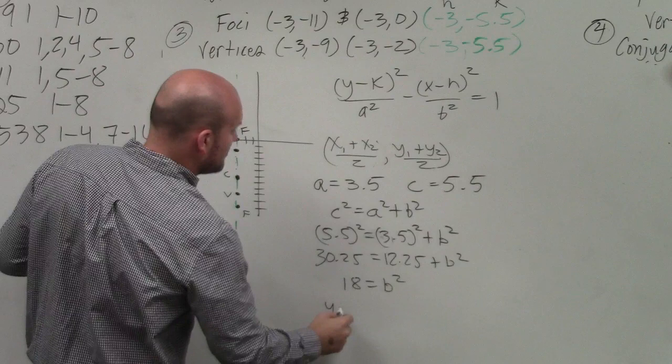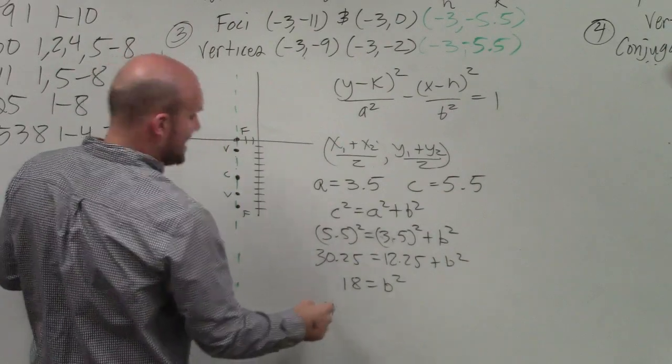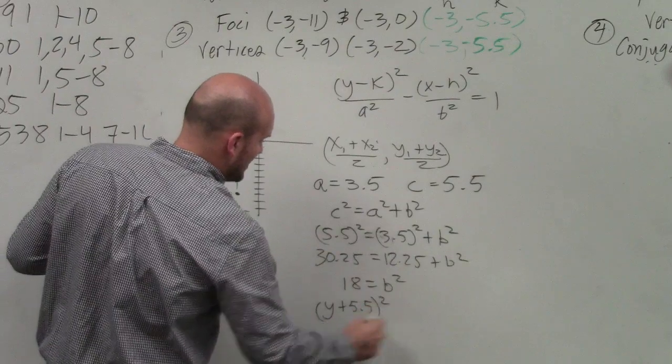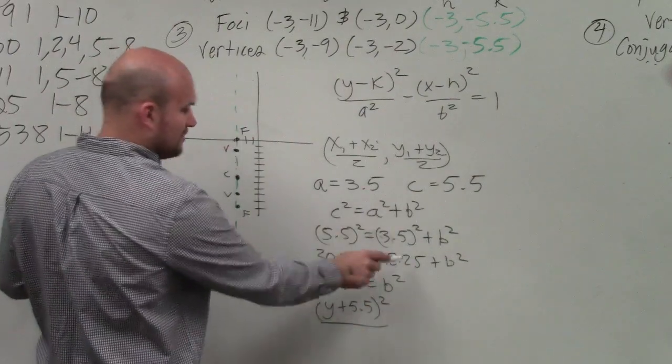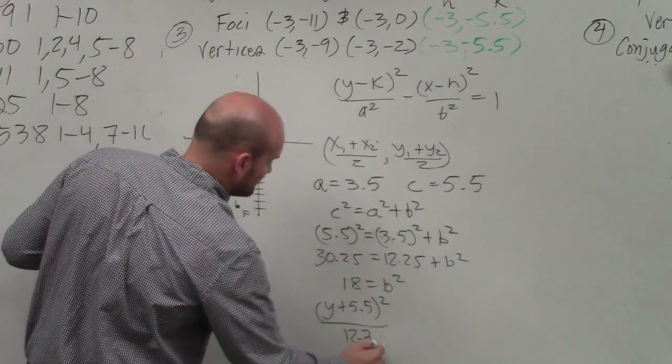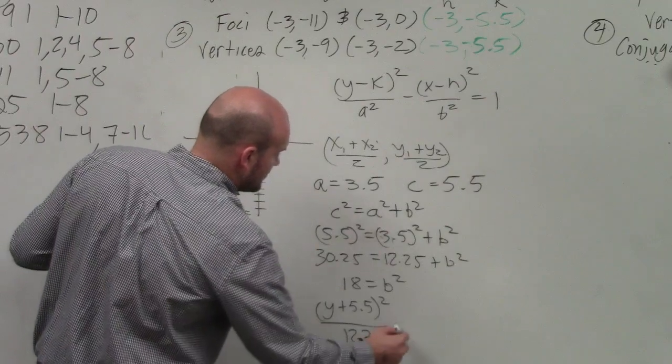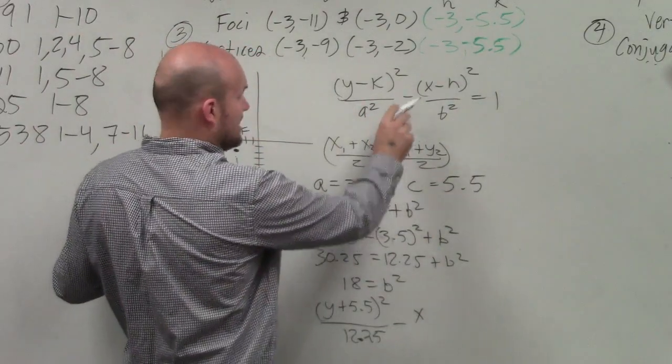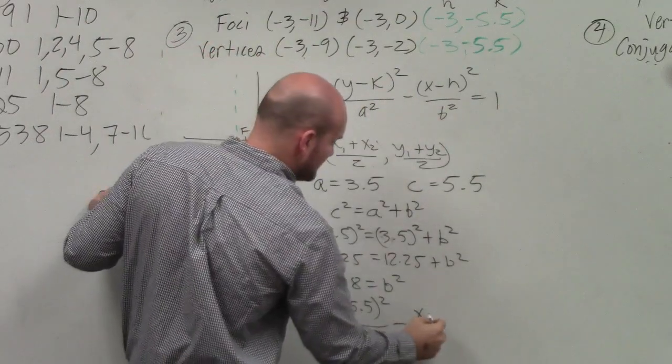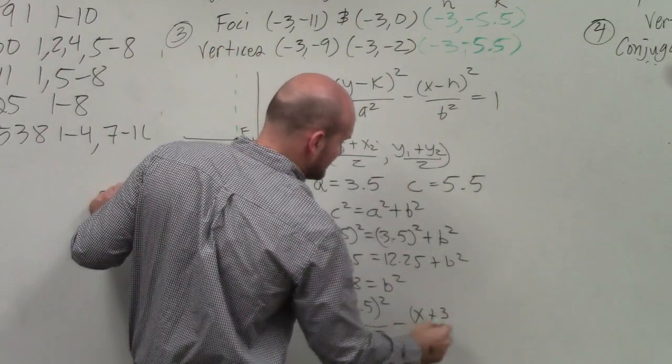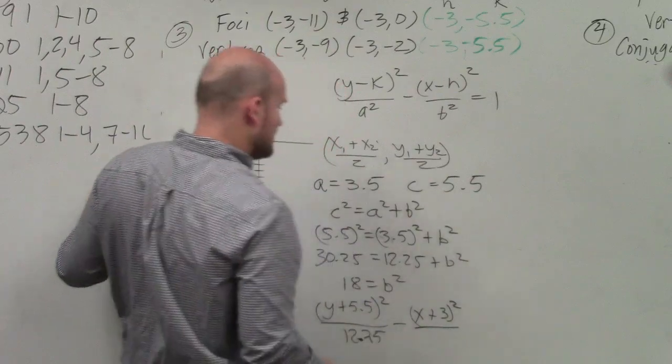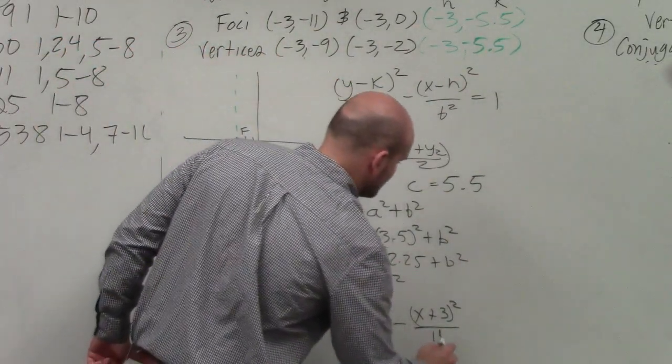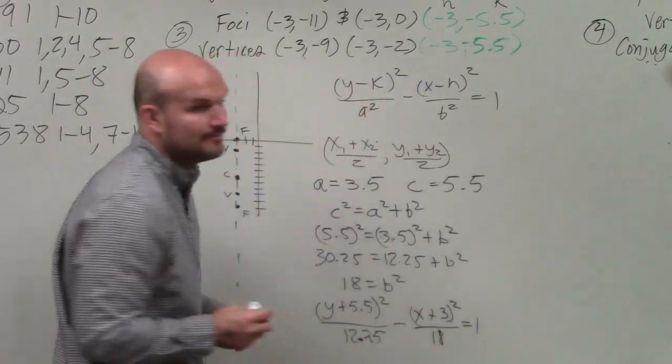So I have y minus k, which is negative 5.5, so it's plus 5.5 squared. That's over a squared, which is 12.25, minus x minus h, which is negative 3, so that's plus 3, squared over b squared, which is 18, equals 1. Done.